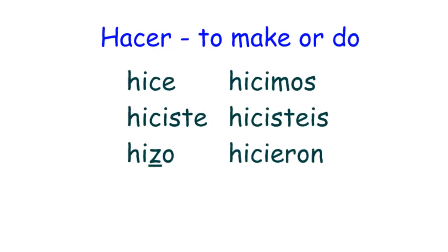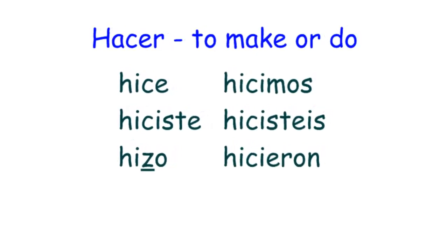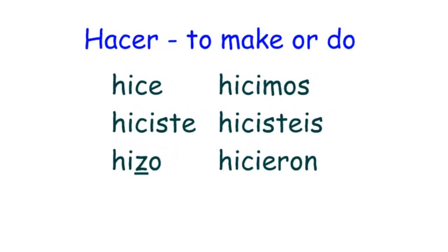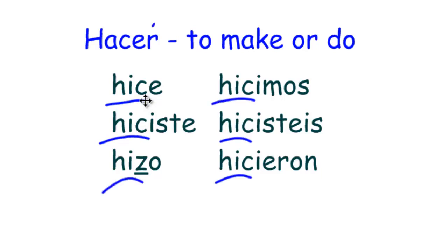First, let's look at how they all look. Here's hacer. Notice in the él/ella/usted form it does that spelling change — hice, hiciste, hizo. The stem goes to HIC for most forms but HIZ for the él/ella/usted form — HIC, HIC, HIZ, HIC, HIC, HIC. That's the hacer change.